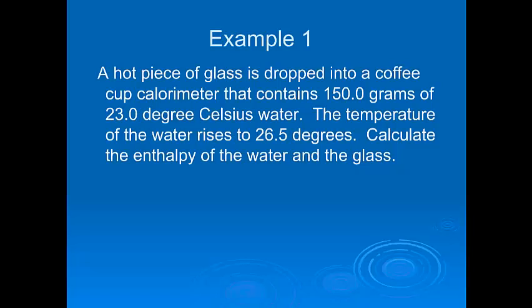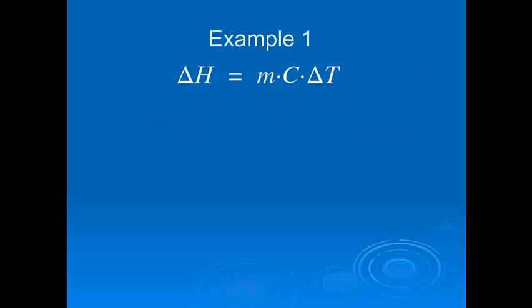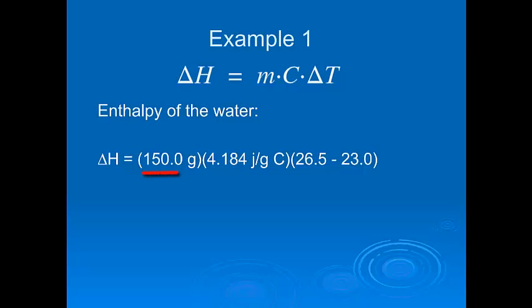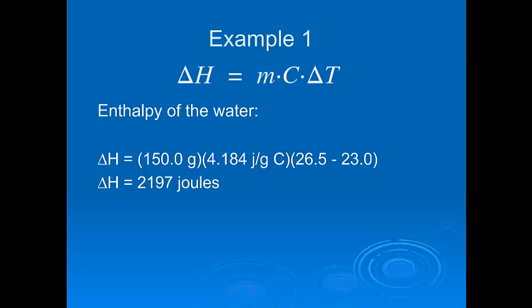Well, we know it went into the water. And we also want to figure out the enthalpy for the glass. We're going to use our equation: delta H equals M times C times delta T. M is the mass of the water — 150 grams. C is the specific heat capacity of water — 4.184 joules per gram degree Celsius. And delta T is the change in temperature of the water: final temperature 26.5 minus initial temperature 23.0. So we get 2,197 joules — that's the amount of heat the water gained.